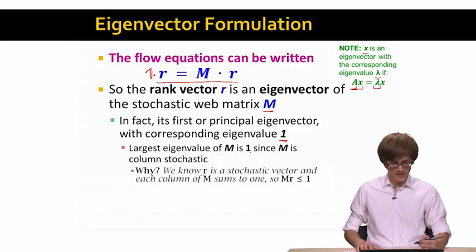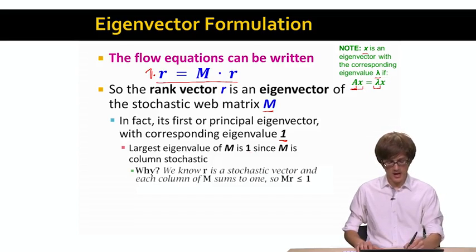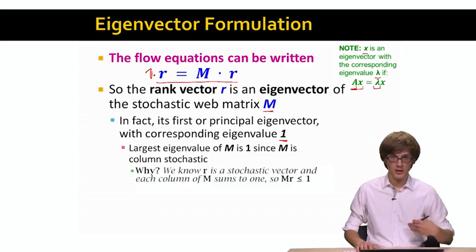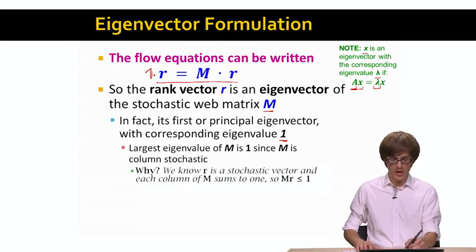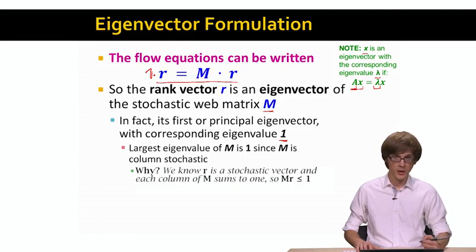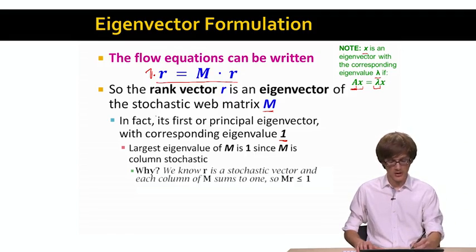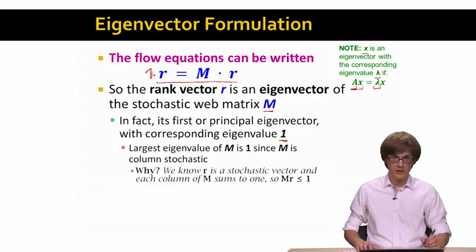Why is that the case? That's the case because vector R has a unit length, meaning its coordinates are non-negative and they sum to 1. And each column of M also sums to 1. So M times R will be the value of that product, of that dot product, will be at most 1. This means that the corresponding eigenvalue, the largest eigenvalue of our matrix is 1.